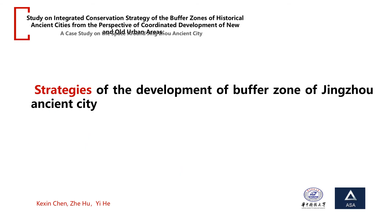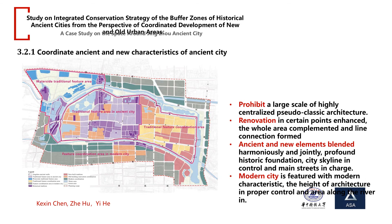Regarding the development strategy of the buffer zone of Jingzhou ancient city: first, coordinate the ancient and new characteristics of the ancient city. Prohibit large-scale, highly centralized pseudo-classic architecture. Renovation at central points is enhanced, the whole area is completed, and light connections are formed. Ancient and new elements are planted harmoniously and jointly. Modern areas are developed with modern characteristics, with appropriate building heights and proper cultural consideration in the areas along the river.